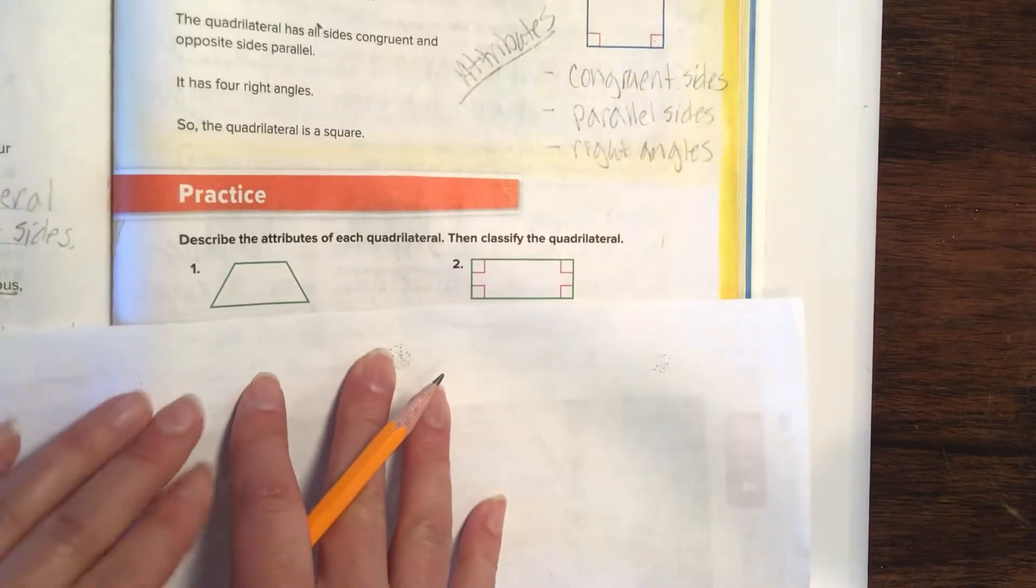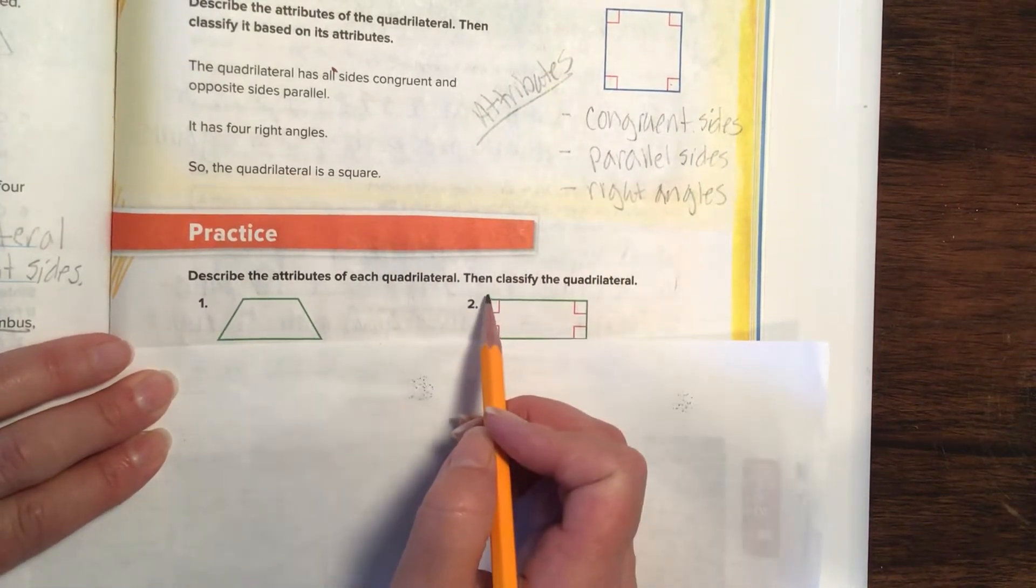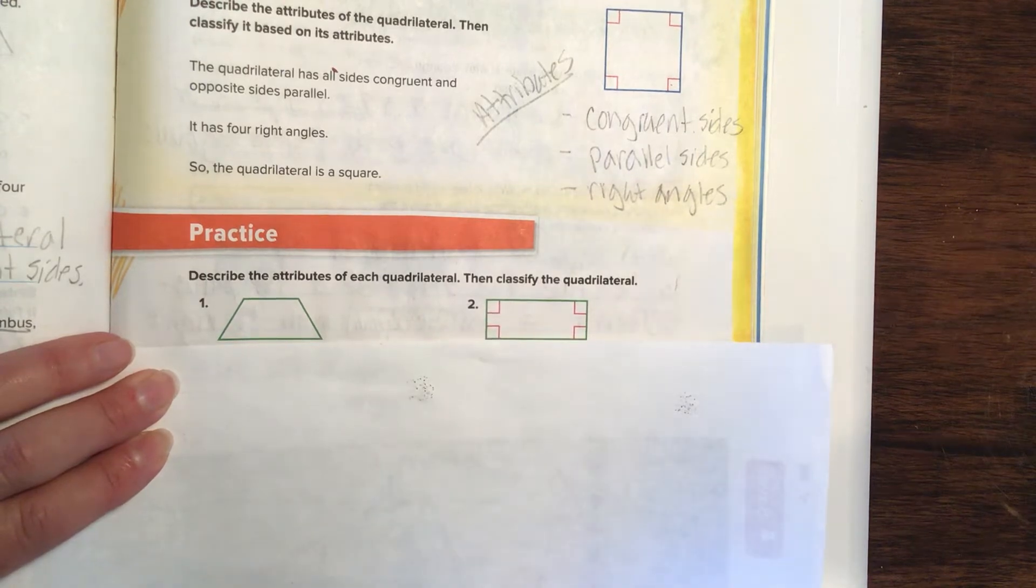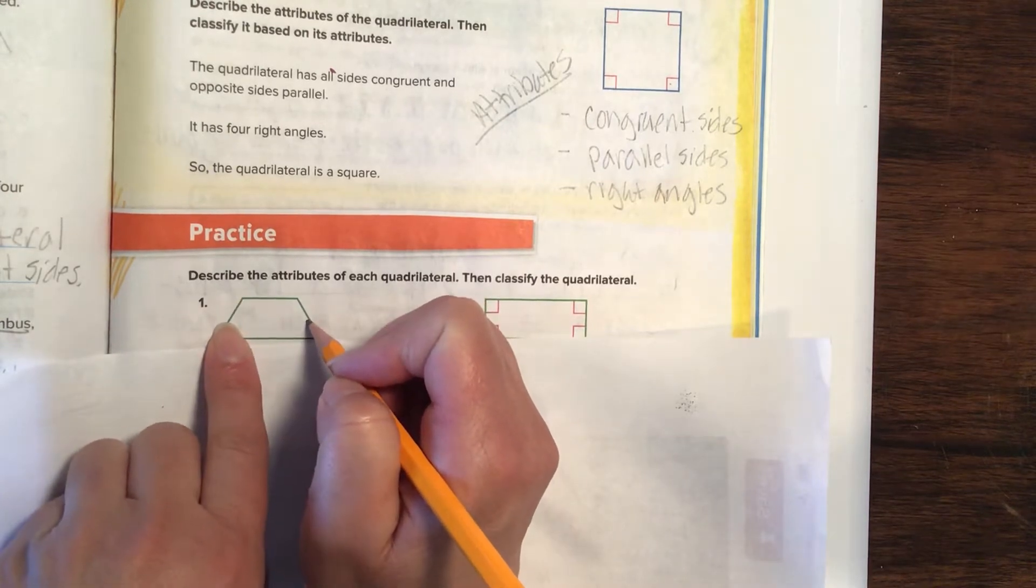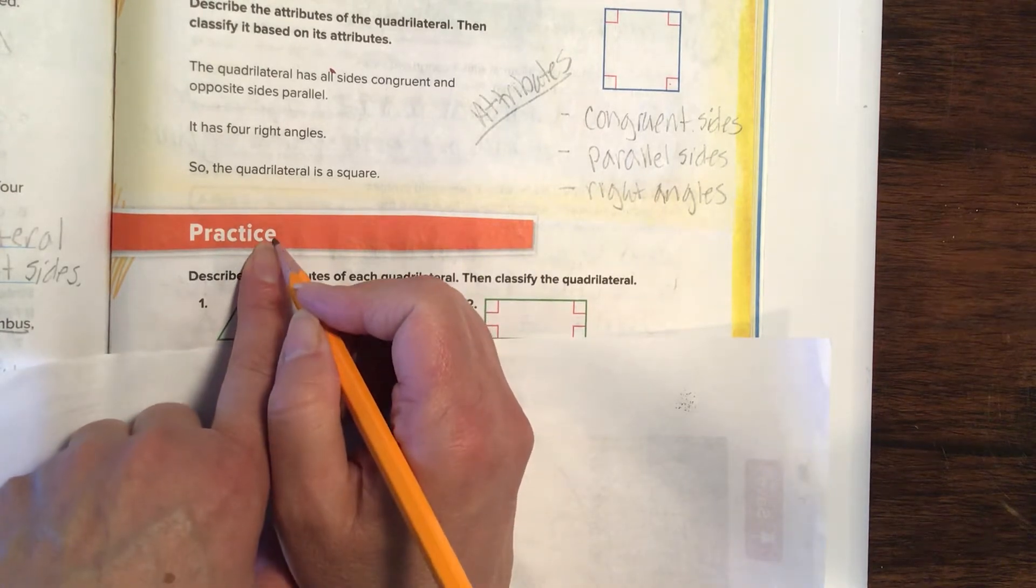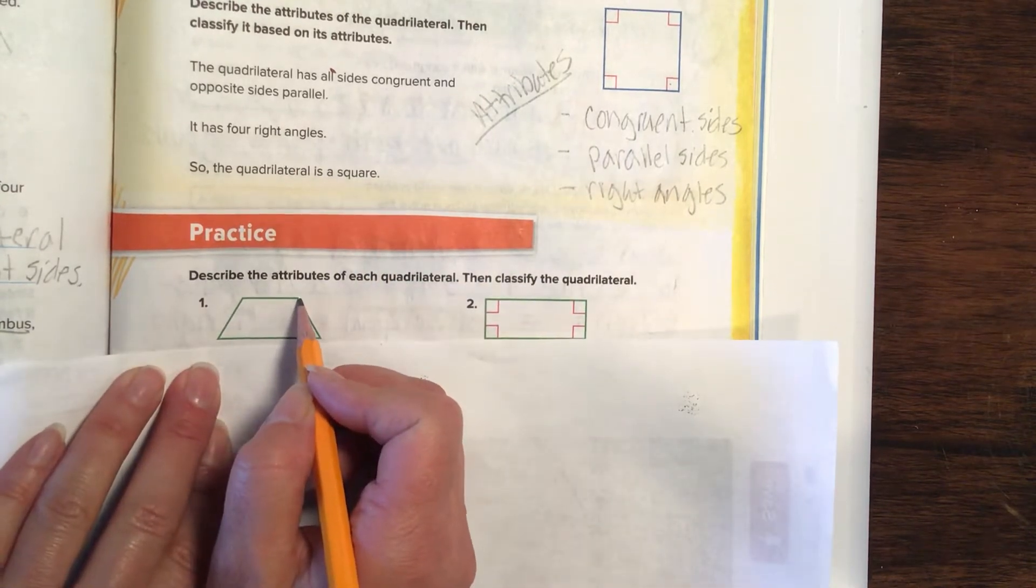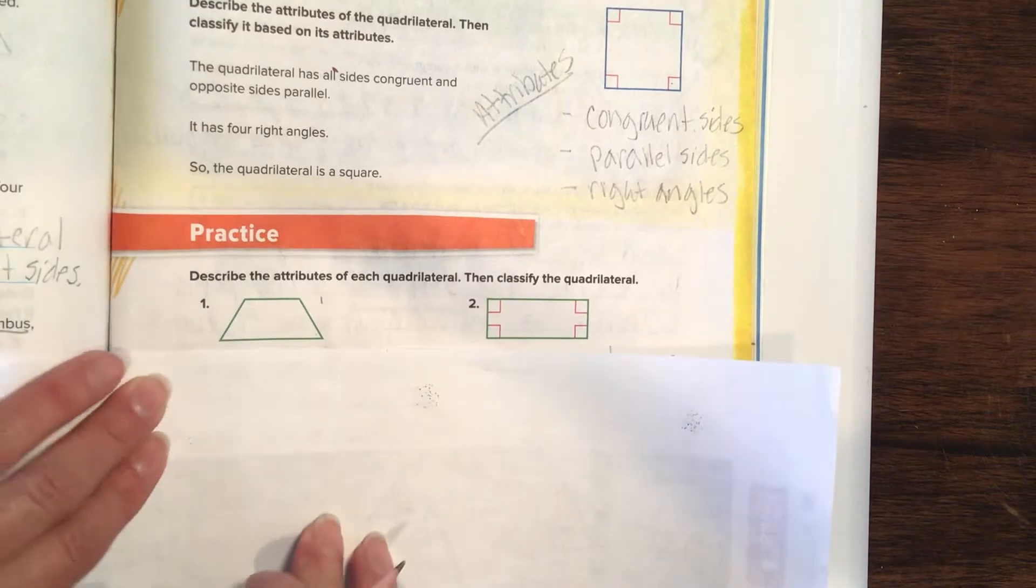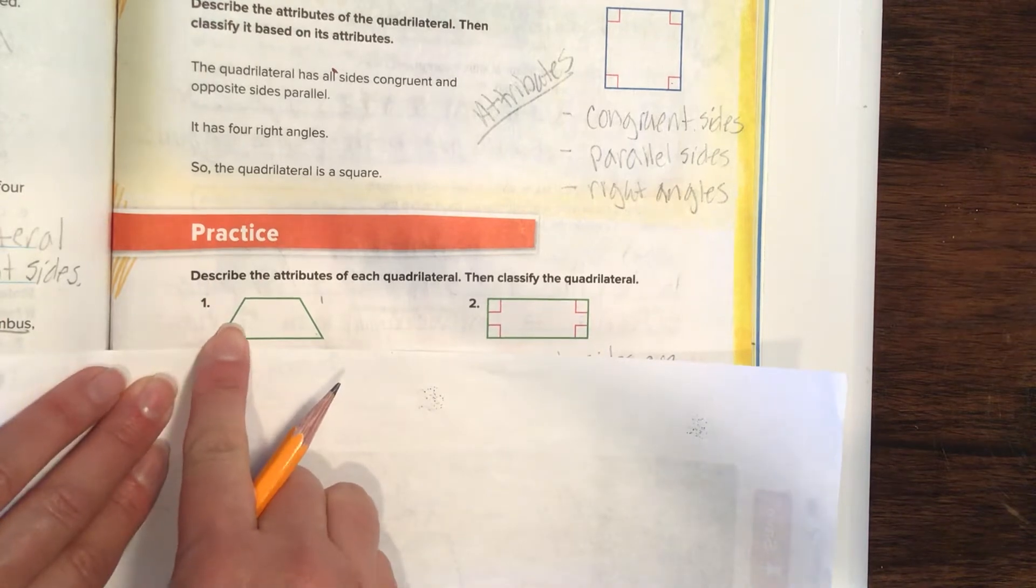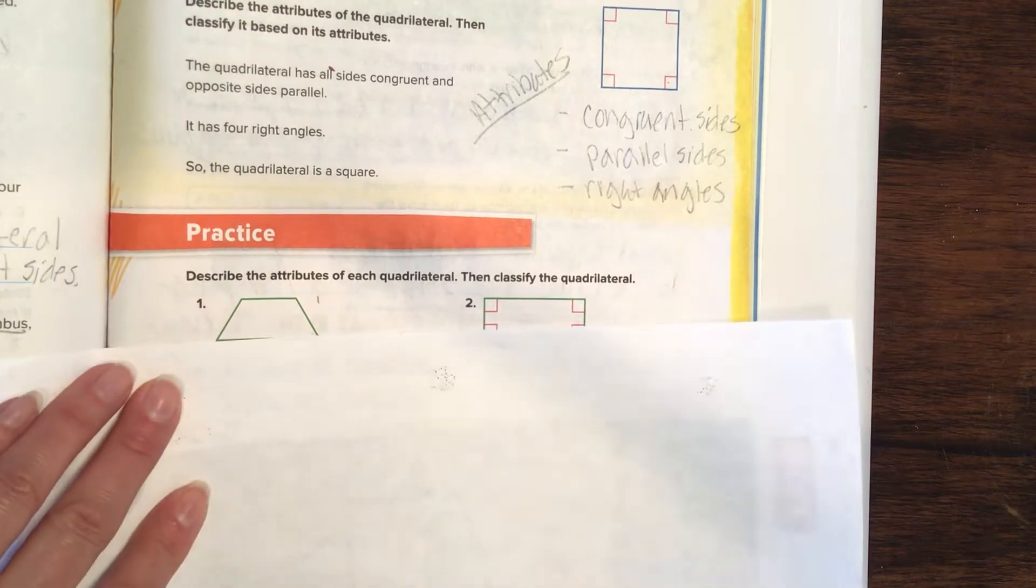Let's move on to the lesson. We are classifying quadrilaterals. We have to describe the attributes, then classify it. If I'm looking at this, these two lines are opposite, but they are going to interconnect here, so they are not parallel. But this line and this line are parallel. So I only have one pair of parallel sides. Now, I don't really have right angles through all this. That's an acute, and these are obtuse.